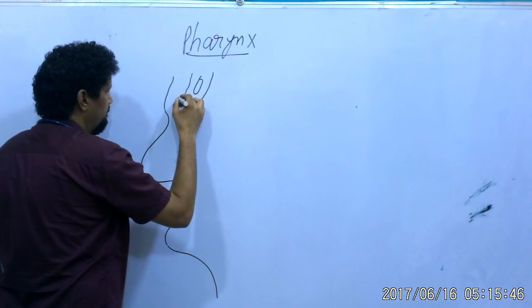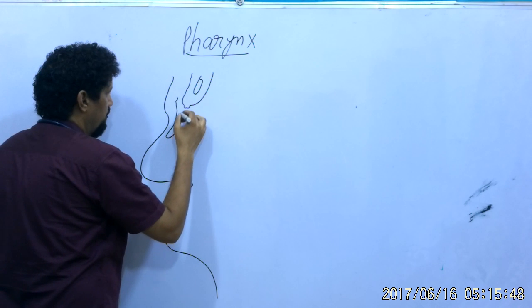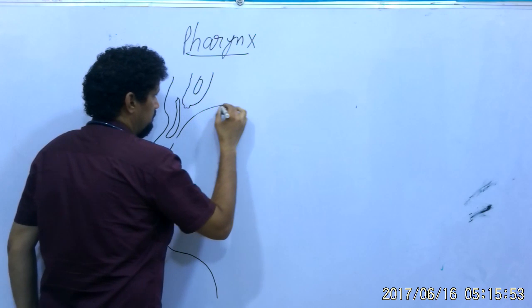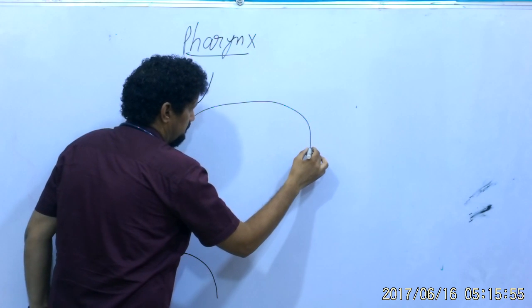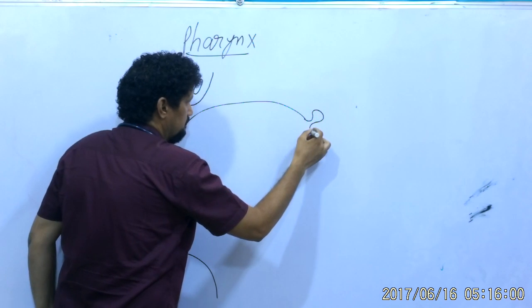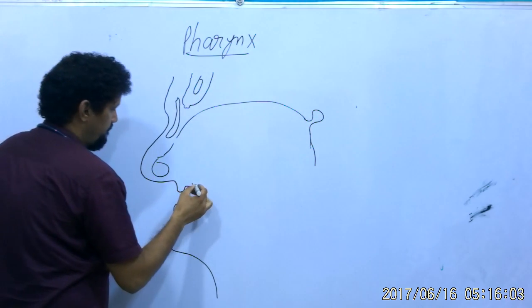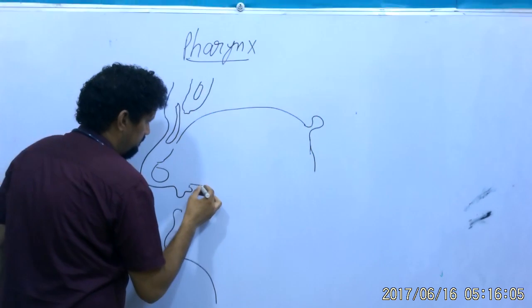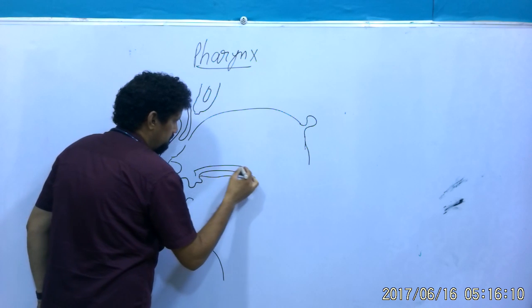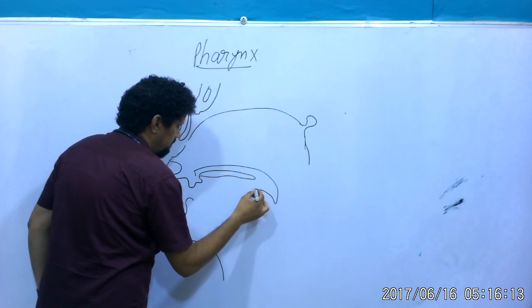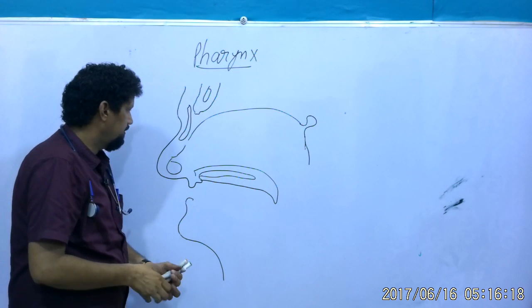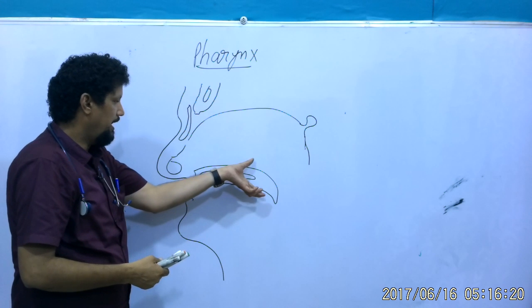Looking at the diagram, this is the frontal bone, the nasal bone, the bony palate and the soft palate.